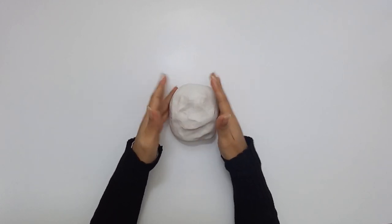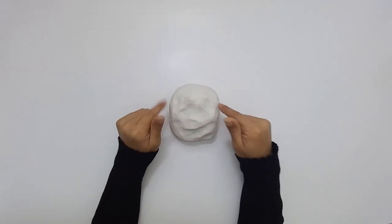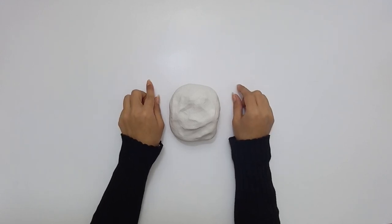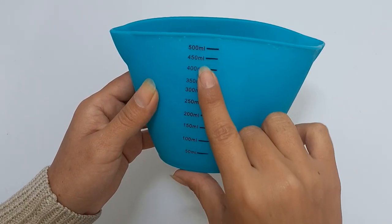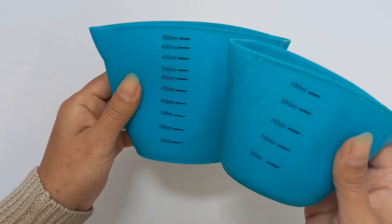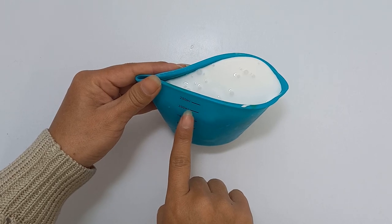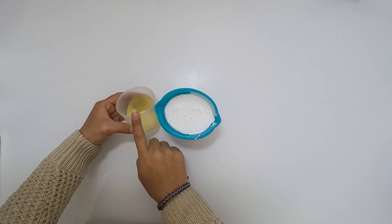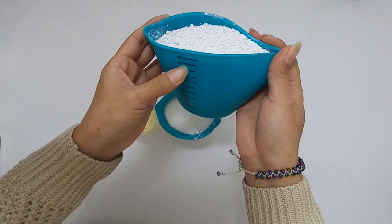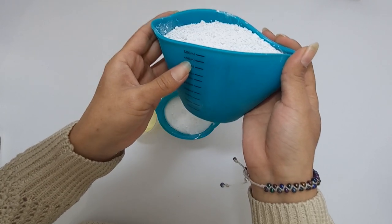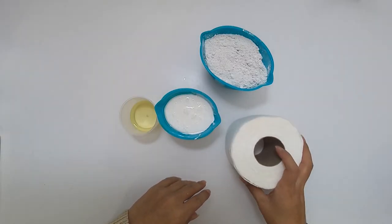If you're interested in the making process of this clay please keep on watching. I use these milliliter silicon cups for measurements. We're gonna need 200 milliliters of wood glue, 50 milliliters of vegetable oil that we're gonna use throughout the kneading process, 450 milliliters up to 500 and 50 milliliters of chalk powder, and nine sheets of toilet paper.